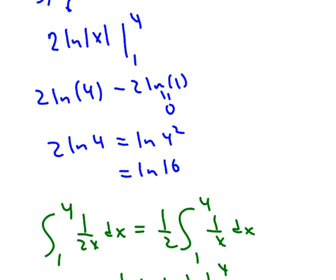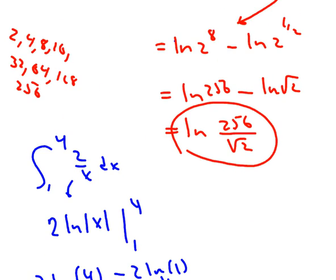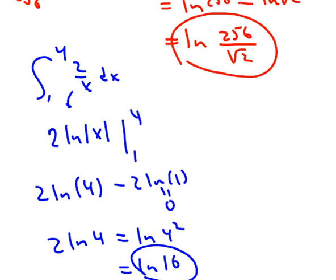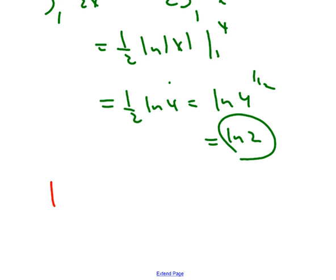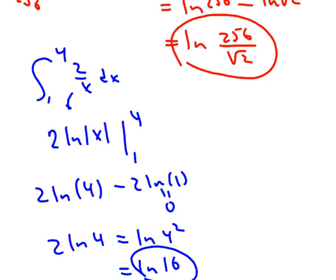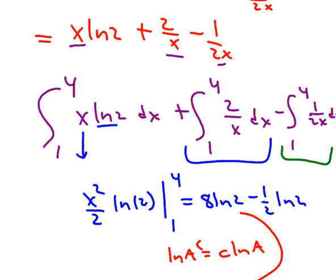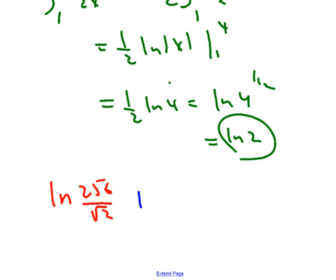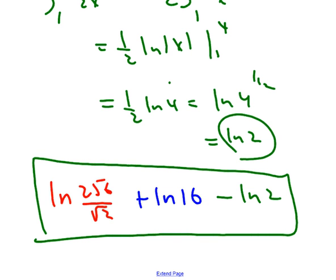So at this point now, we have evaluated all three of these integrals. So the red, the blue, and the green. So let's see if I can remember all this. ln of 256 over the square root of 2. Then I'm going to have plus. It was plus originally. There's a plus here and a minus here. So I'm going to do plus the blue one, ln of 16, plus the ln of 16, minus the green one, minus the ln of 2. I suppose that's good enough. There's probably some more simplifying you can do. You always have that option. I think that's a good place to start. Thanks for watching.